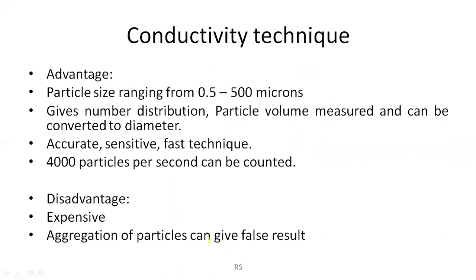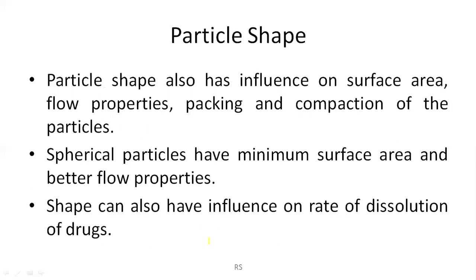The advantages of the conductivity technique are that particle sizes ranging from 0.5 to 500 microns can be easily identified. It gives number distribution and particle volume measurement, and can be converted to diameter. This method is accurate, sensitive, and very fast — around 4000 particles per second can be counted, and large numbers of particles can also be counted. The diameter of the sphere of equivalent volume can be easily calculated, and the process is very rapid with a single run taking less than 30 seconds. Disadvantages include that the material must be suspended in an electrolyte liquid before measurement, aggregation of particles can give false results, and the technique is very expensive.